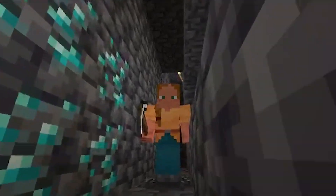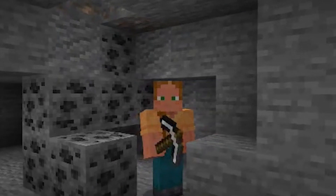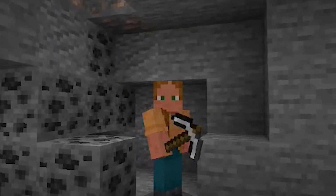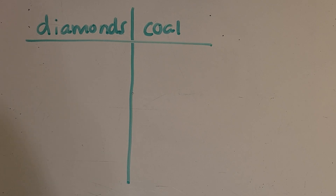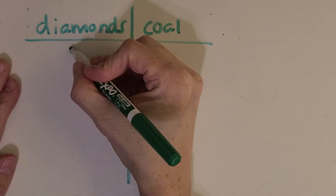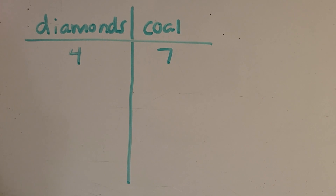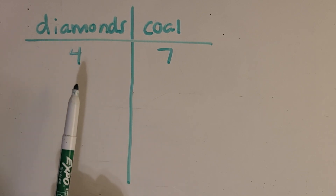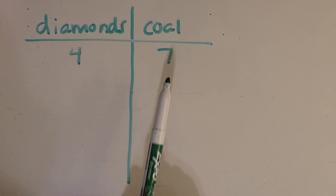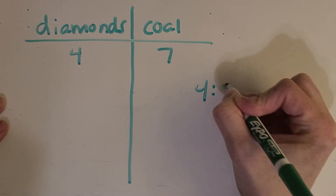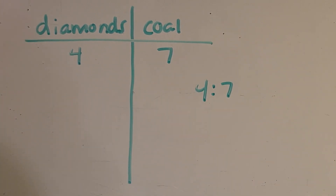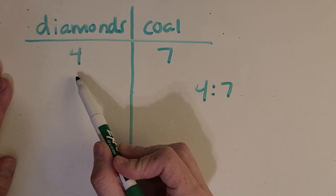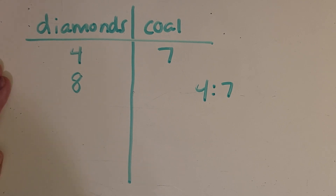I dug down pretty low and found some diamonds, and of course I also found some coal. I'm going to use this as a ratio example. Now we're going to look at one from my last video where I introduced ratios. I was out mining and I found four diamonds for every seven coal — so that's my ratio, four to seven. I like to jot this down as I'm working on a table so I can always refer back to the original ratio.